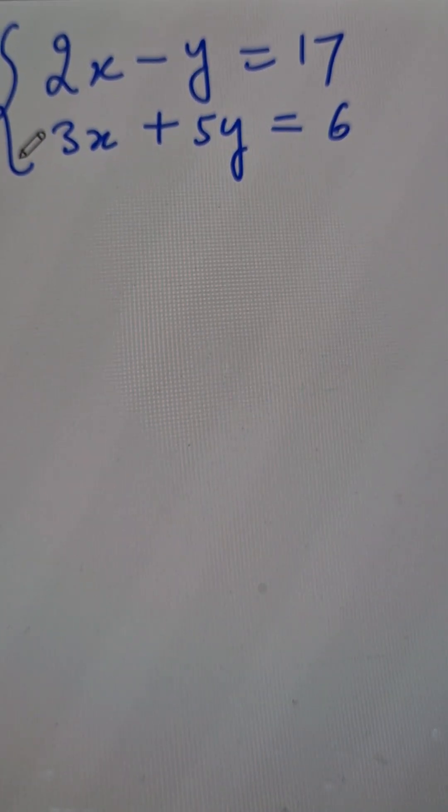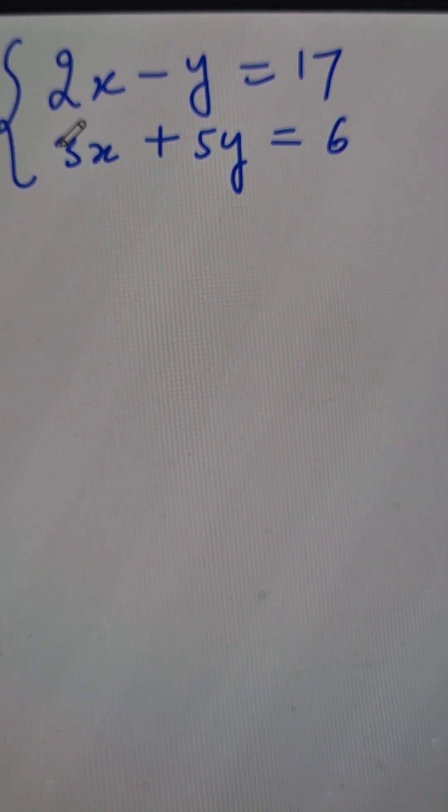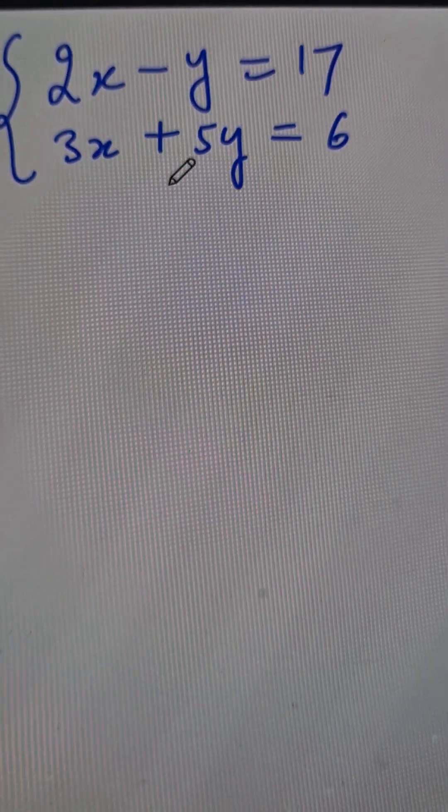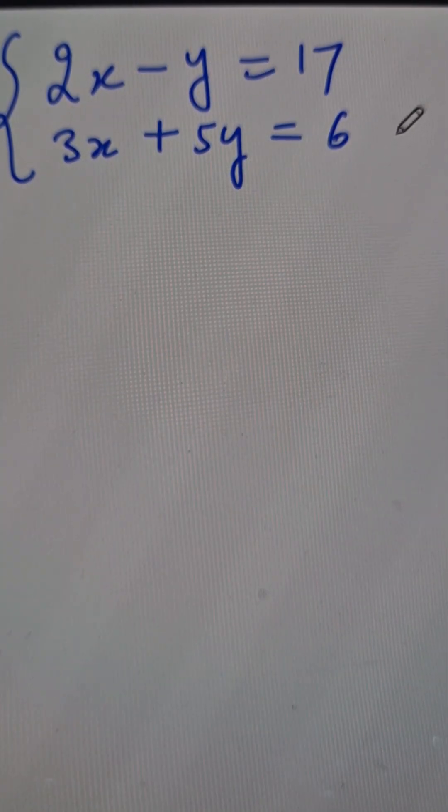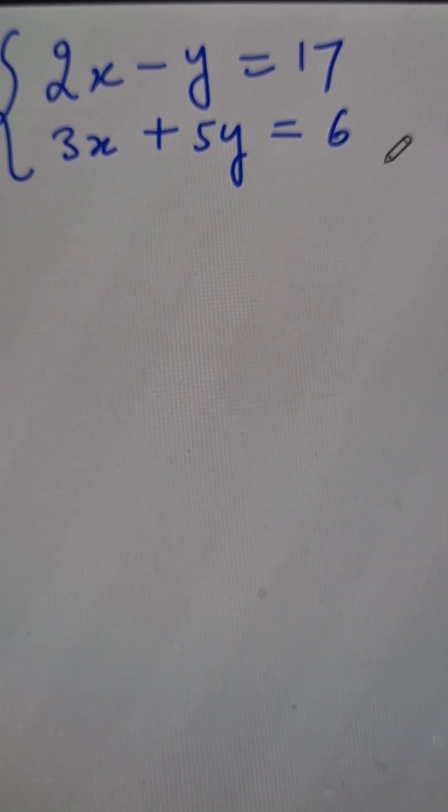Look at this pair of linear equations: 2x minus y equals 17, 3x plus 5y equals 6. We need to find the values of x and y.